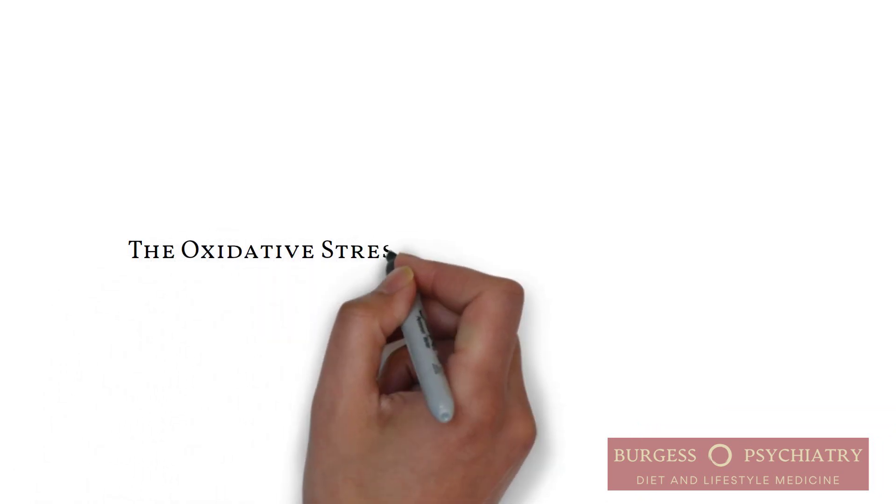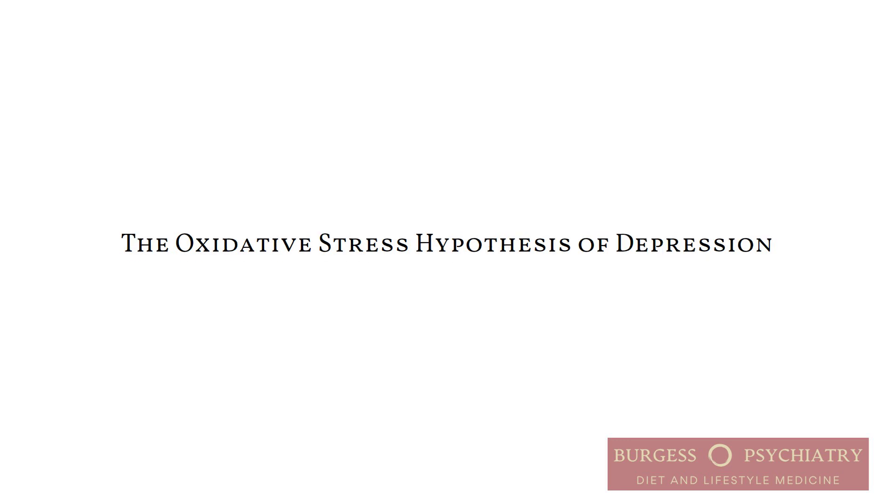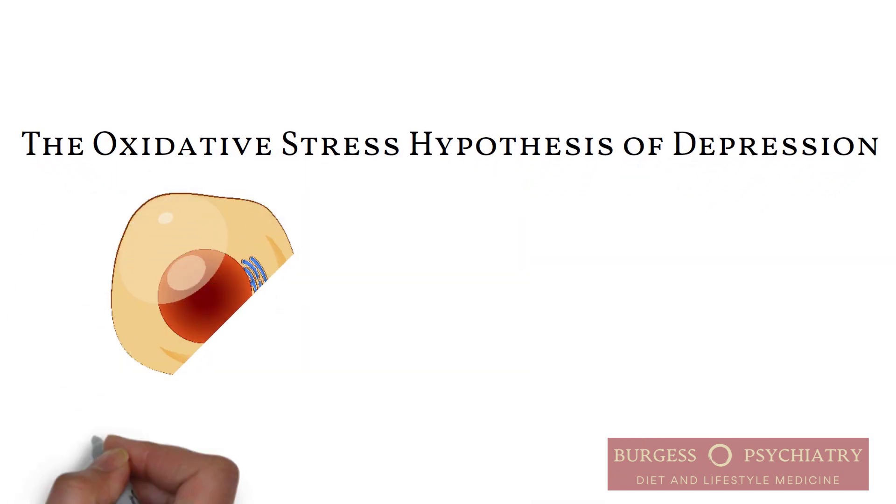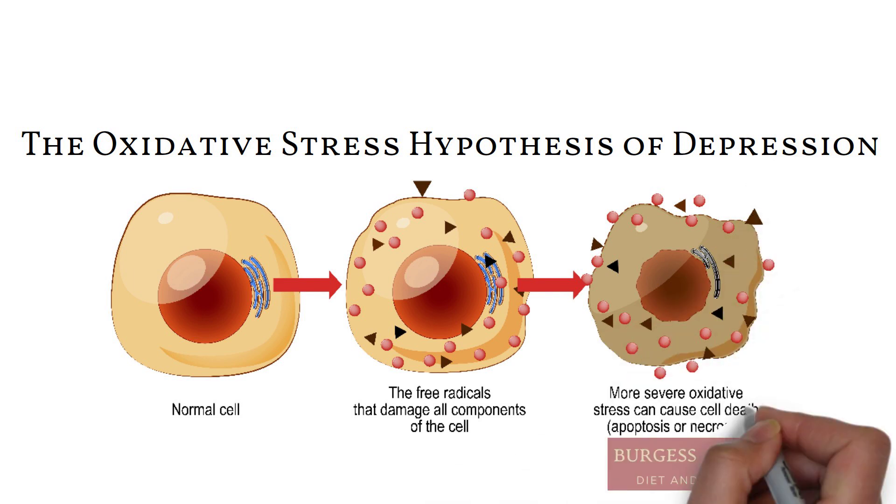We're going to talk about the oxidative stress hypothesis of depression. Now, oxidative stress is a fundamental mechanism causing many diseases. We're going to speak about the cycle of oxidative stress and inflammation in the central nervous system.